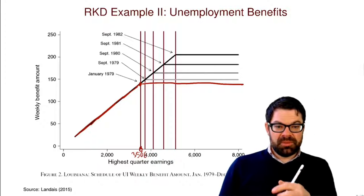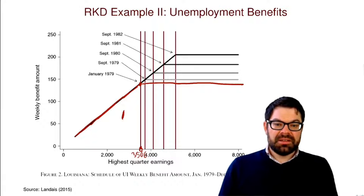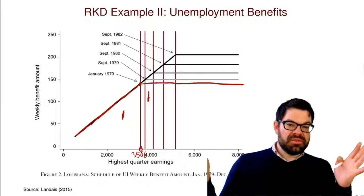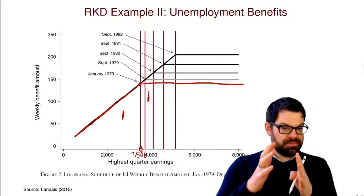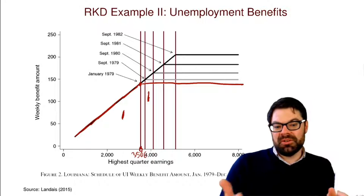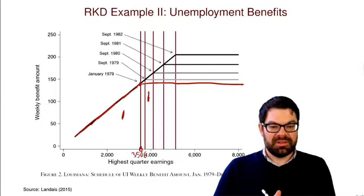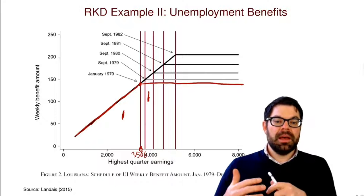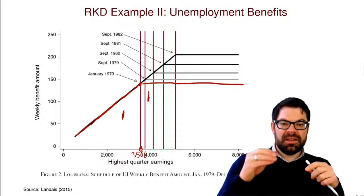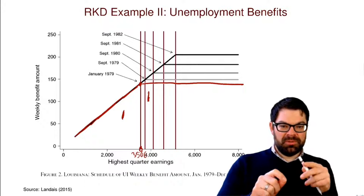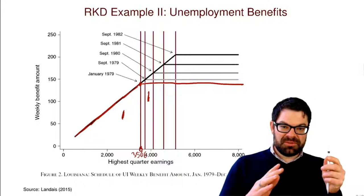No matter if your earnings exceeded — I think that point is probably three and a half thousand dollars a month — if they exceed that, your weekly benefit amount will stay at $140. That cap was gradually increased, and that's something he then also exploits. What we basically want to study in a regression kink design is: if we see a kink in the assignment function, do we also see a kink in the outcome? Can we then relate the two? People around the threshold receive a lower benefit amount than those above, and we can assume the two groups, when close to the threshold, are pretty much the same.